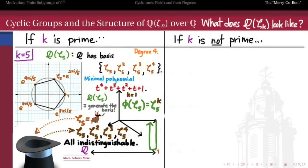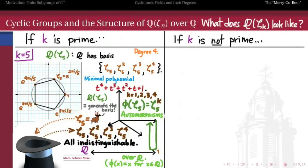What we're really doing is taking the field Q adjoined zeta_5, hiding the generator of the basis, and bringing it back — constructing a field homomorphism from Q adjoined zeta_5 back to itself. We go down to the rationals by hiding zeta_5 and then return to the extended field, taking the original zeta_5 and coming back with zeta_5 raised to any power from 1 through 4. What we get is an automorphism of this field — a homomorphism of the field to itself that is an automorphism over the rationals, since the rational numbers themselves do not move during any of these automorphism operations.